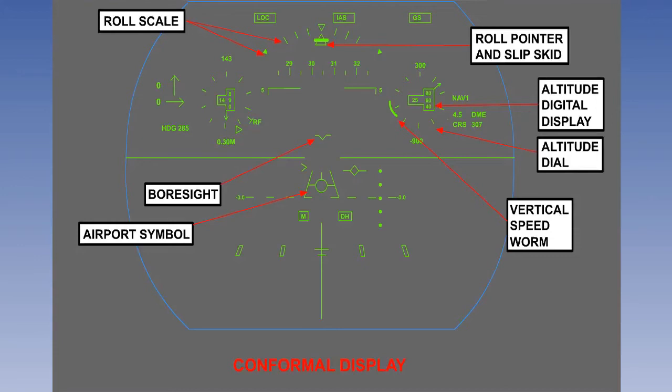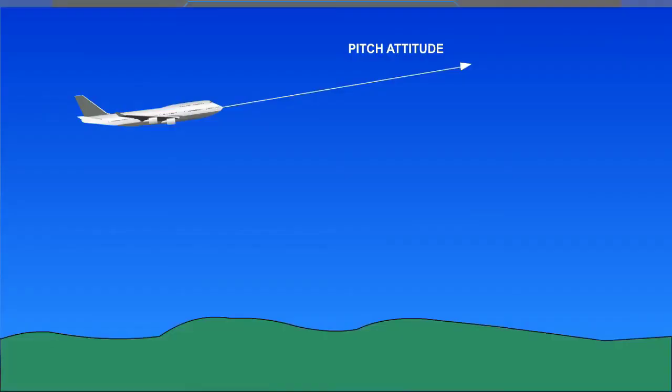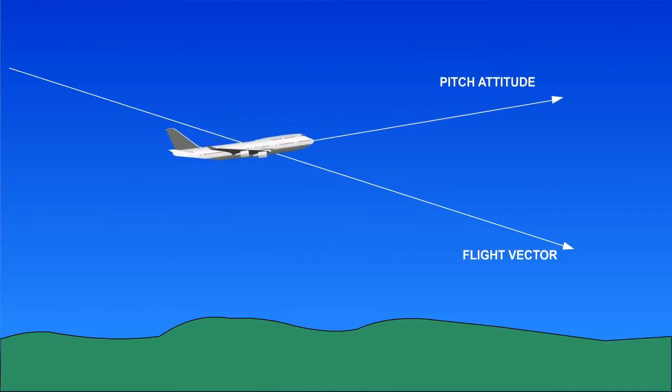However, one of the most important symbols is the flight path vector. This shows the direction in which the aircraft is flying. This is not necessarily the same thing as the aircraft's attitude. For instance, an aircraft can be pitched nose up. But if the speed is low, it may be descending, as happens, for instance, on an approach to land.